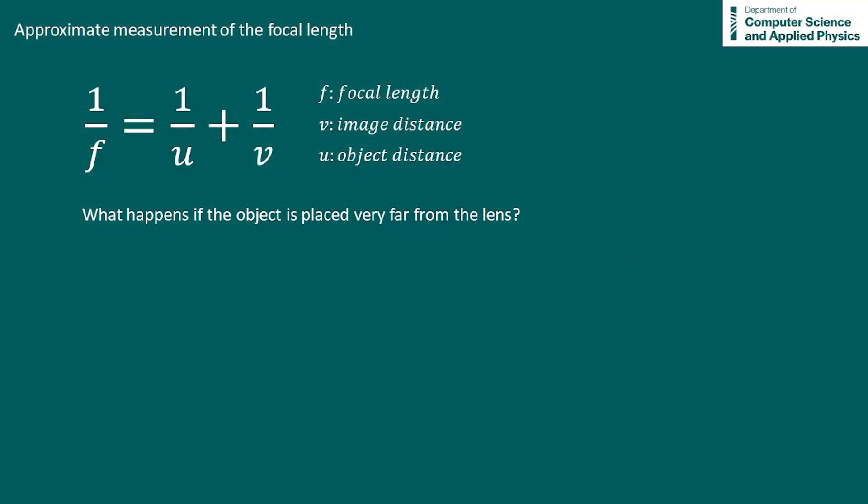Before we can make an approximate measurement of the focal length, we need to look at the lens formula. Now what happens to this formula if the object is placed very far away from the lens? If the object distance is infinity or very far away, then 1 over u becomes 0.